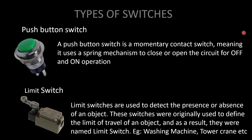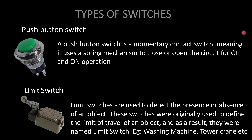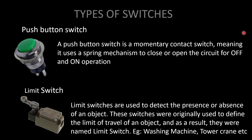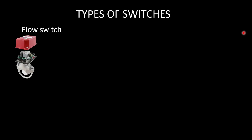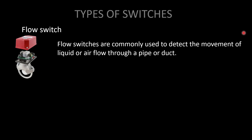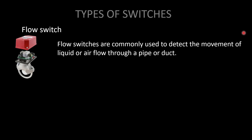A limit switch is used to detect the presence or absence of an object. They were originally used to define the limit of travel of an object. For example, limit switches are used in tower cranes to limit horizontal movement, protecting the crane arm from hitting other buildings or cranes. They are also used in washing machines — when the door opens, the limit switch is triggered and the machine turns off. Flow switches detect the movement of liquid or air through a pipe or duct, and are widely used in firefighting sprinkler systems and HVAC applications.